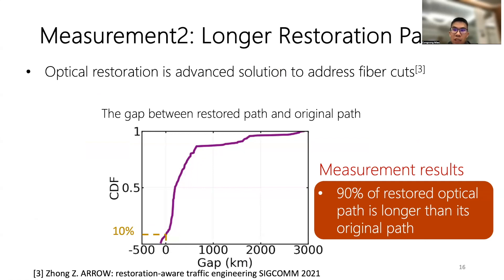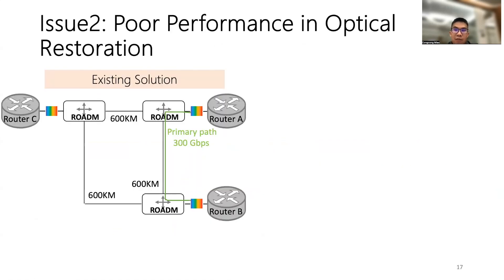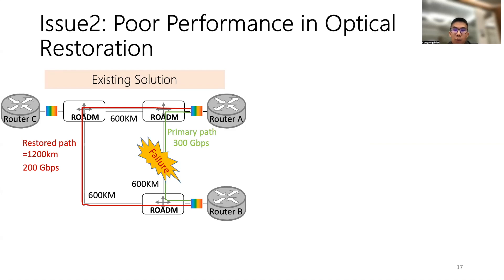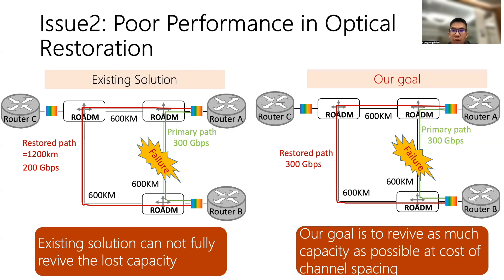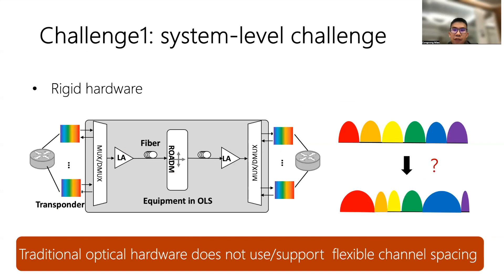Furthermore, optical failures are inevitable, and optical restoration is a recently advanced solution to address fiber cuts. Our measurement of a production WAN shows that 90% of restored optical paths are longer than their original path. The existing optical backbone is not well-equipped for this. For example, when the primary fiber fails, the wavelength is rerouted to a restored path of 1,200 kilometers, which exceeds the optical reach at 300 Gbps. The wavelength is only achievable at 200 Gbps, so capacity cannot be fully revived, which may affect network traffic.